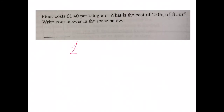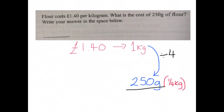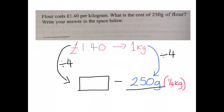We are told that for £1.40 we can get one kilogram of flour and we have to work out the cost of 250 grams. Well, 250 grams is one quarter of a kilogram, so I have divided one kilogram by four to get 250 grams. If I divide my weight by four, I must do the same to my price — I must divide £1.40 by four to get the cost of 250 grams.